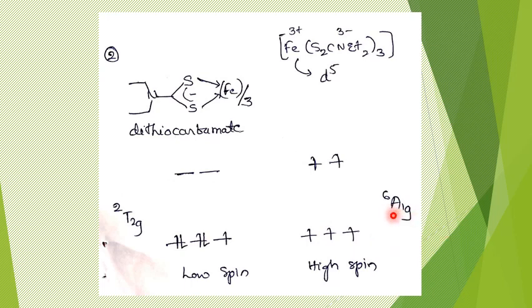Further, the ground state of this will be 6A1g. For this, you should know Orgel diagrams. For high spin d5 case, the corresponding term symbol will be 6S, and 6S when it enters into octahedral field results in 6A1g. If you look at the options A and C, both have this 6A1g, so based on this you can eliminate B and D. But just by identifying 6A1g as ground state term symbol for octahedral complex, it is not possible to answer this question correctly.